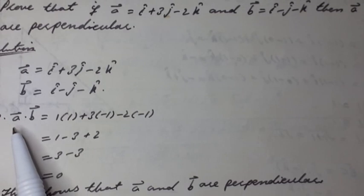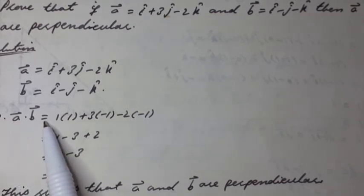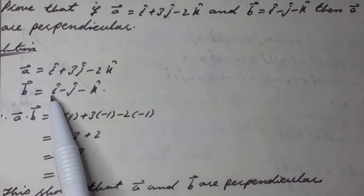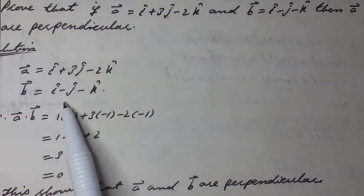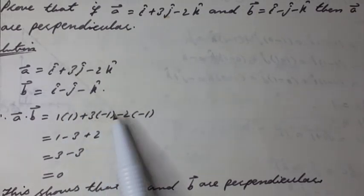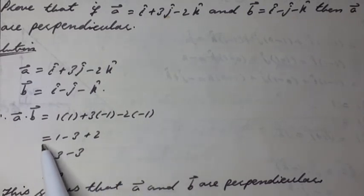Therefore, according to the definition of scalar product of two vectors in component form, we have a vector dot b vector is equal to 1 into 1 plus 3 into minus 1 minus 2 into minus 1.